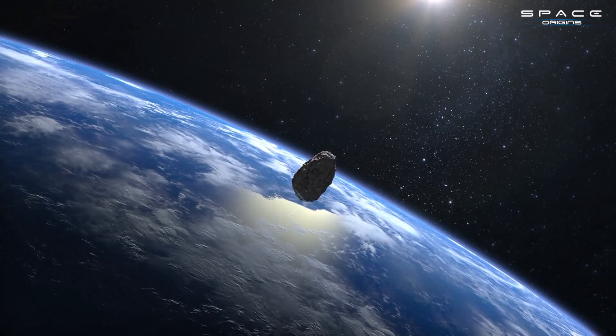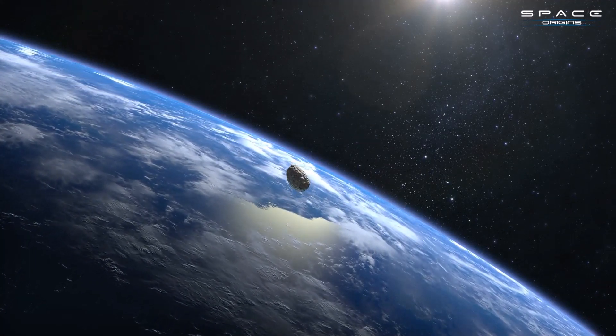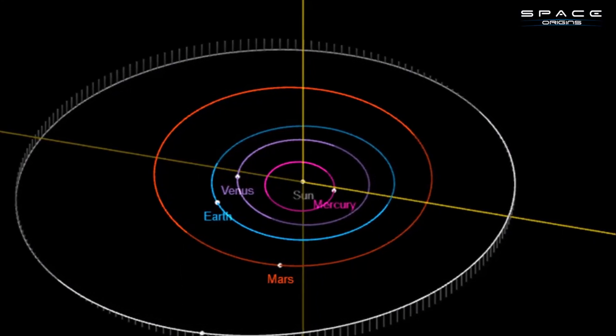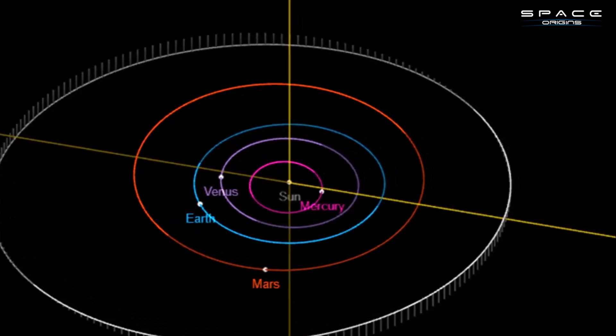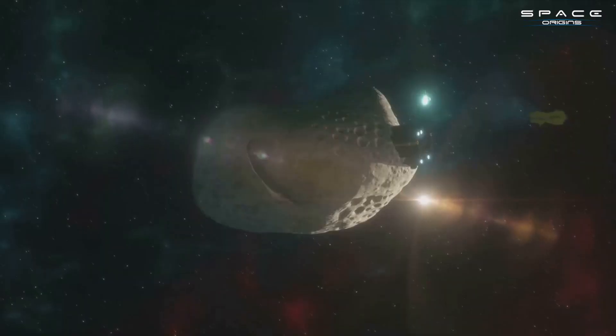But it's not just about detection. These telescopes will also provide early warnings about potentially hazardous asteroids. By tracking the orbits of detected asteroids, they can predict if and when an asteroid might pose a risk to Earth, giving us time to prepare and potentially avert disaster.